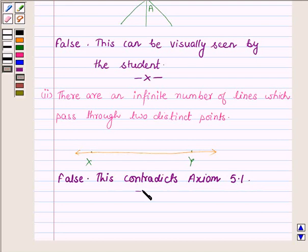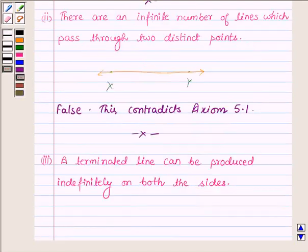So this completes the second part, and now proceeding on to the third part which says: a terminated line can be produced indefinitely on both sides. A terminated line is a line segment.